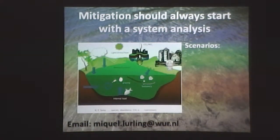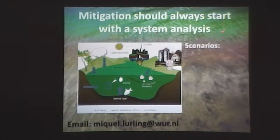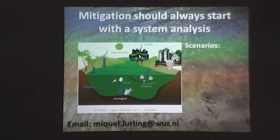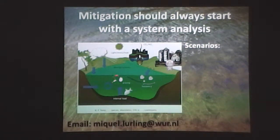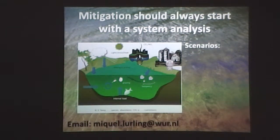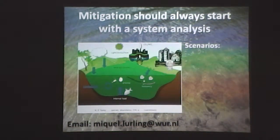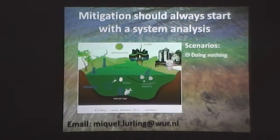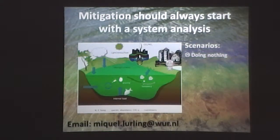To summarize it all: mitigation should always start with a system analysis. You need to know all your inflows and the contribution of different sources of nutrients, you need to know the biological makeup of your system. And altogether, it will guide you to what might be done. And the third thing most people don't want to hear — but doing nothing is always an option. It depends on the cost and on the feasibility. It is the worst option — that's why it's listed.